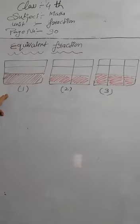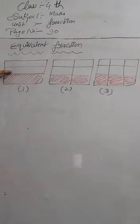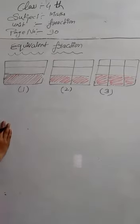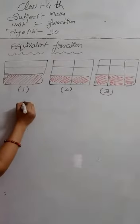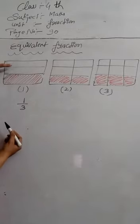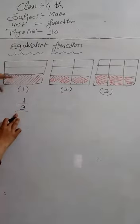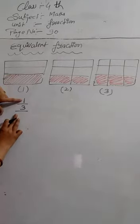In the first figure, the shaded portion is one part. The shaded portion is one part out of three equal parts — one, two, three. Only one part is shaded. So, the fraction indicated by the shaded portion is one by three. Three is the denominator and one part is shaded. So, we will write here one by three.